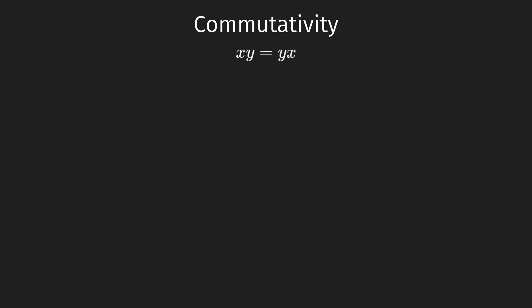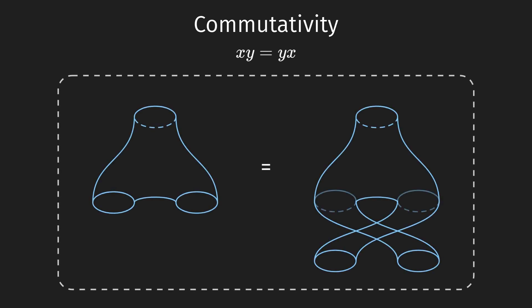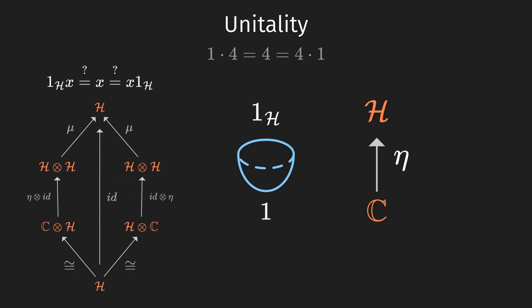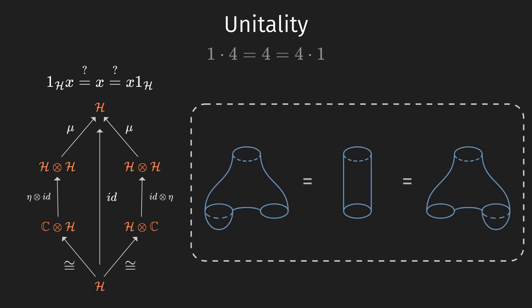In the same vein, we can show that x times y is equal to y times x. Indeed, these two cobordisms are the same. Finally, you may remember that 1 times anything is that thing itself. But what is 1 in this context? This is where the unit comes in. Let us write 1H for the image of the complex number 1 under eta. Then we have that x times 1H is indeed just x. So, the name unit is justified.